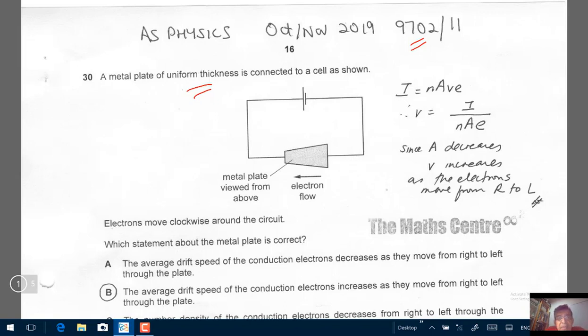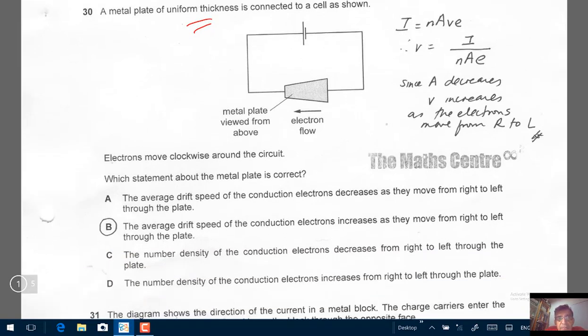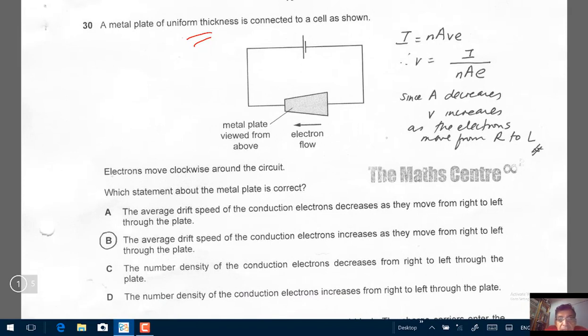The question deals with the average drift speed or drift velocity. And the formula we're going to use to answer this question is I, the current, equals to N A V E. And N is the number of electrons per meter cube. A is the area of the cross section. V is the drift, the average drift velocity. And E is the electron charge. So this is the formula we're using. We know how to derive this. So we can make V the subject. So we have I over N A E.